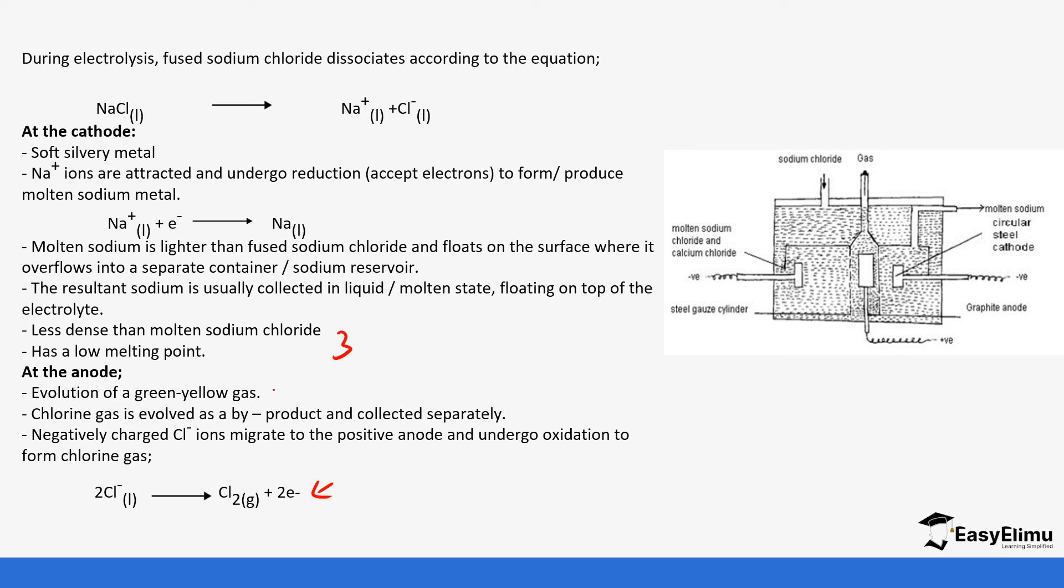At the anode, chlorine gas is given off, which is a green yellow gas and it is evolved as a byproduct. The negatively charged chloride ions migrate to the positive anode and they undergo oxidation to form chlorine gas: 2Cl- → Cl2 + 2e-.